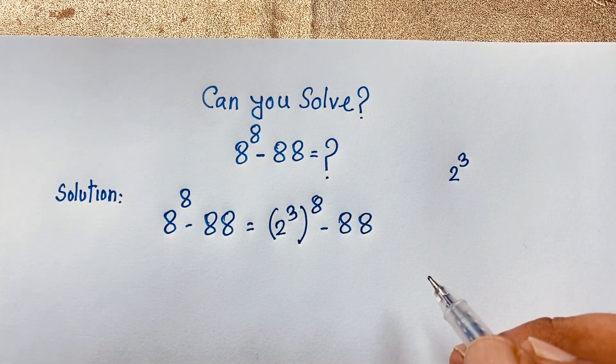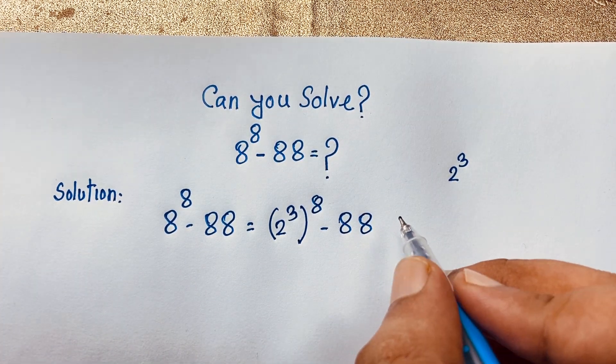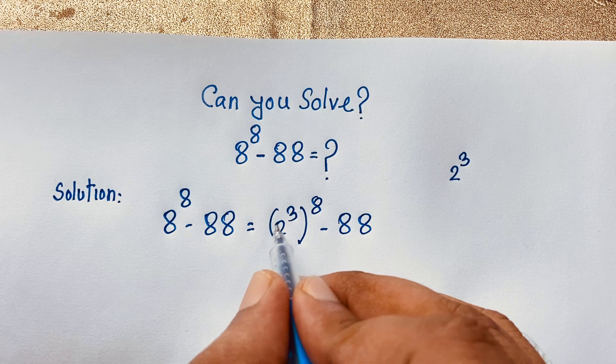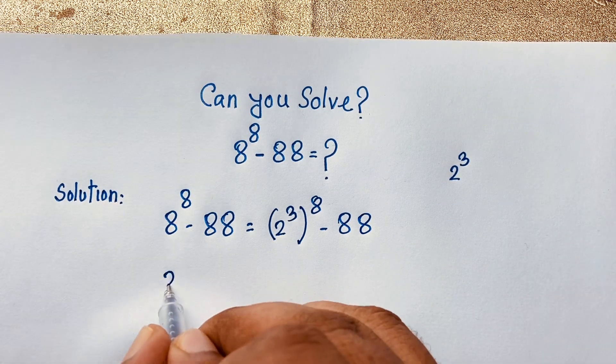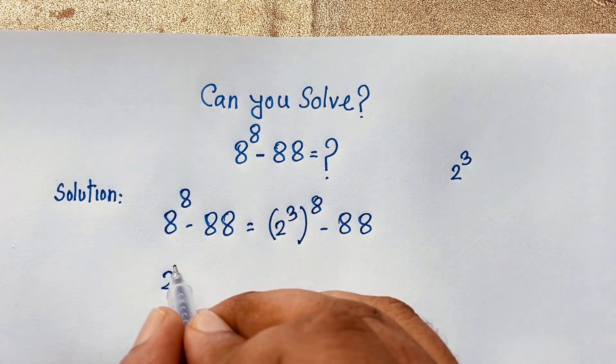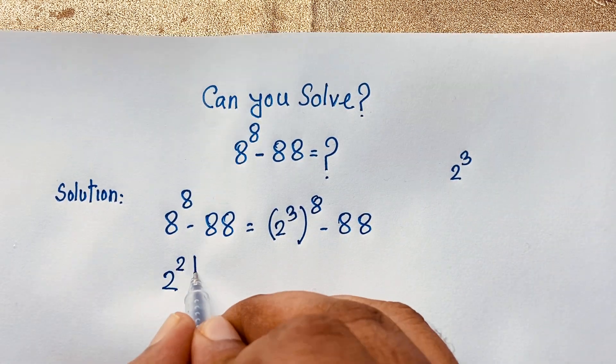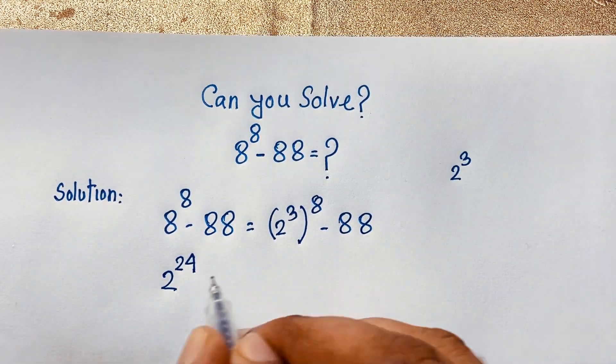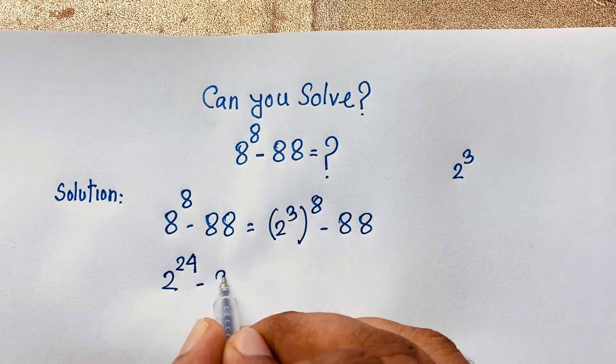Now at this moment you can say here 2 to the power — this 3 times 8 it will be 24. Then here is minus 88.